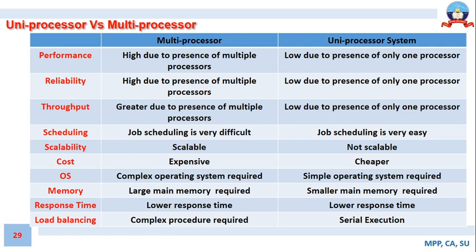The next parameter is throughput, which means the ability of the system to process programs or instructions per unit time. A multiprocessor system has a very high throughput compared to a uniprocessor system because of the presence of multiple processors. A uniprocessor system has very low throughput because jobs are executed only in a sequential manner, requiring considerable time to complete tasks.